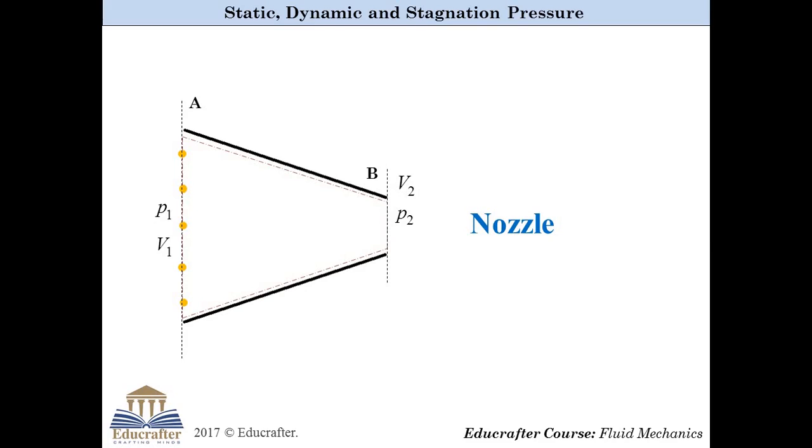Now as particle moving from section A to section B, velocity of particle increases and pressure decreases. That means pressure at section A is higher than pressure at section B. Here fluid flows from higher pressure region to lower pressure region, which is the obvious case.